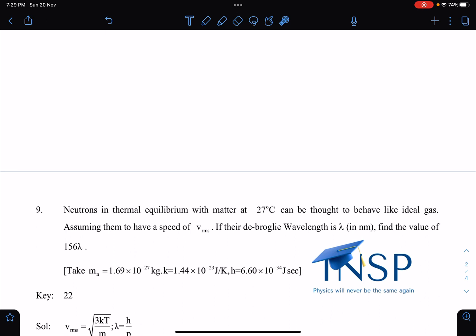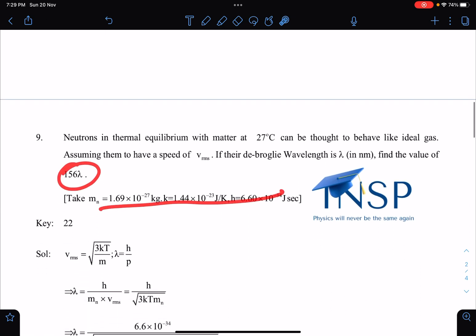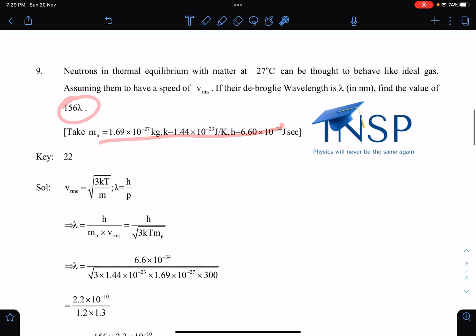If their de Broglie wavelength is lambda in nanometer, find the value of 156 lambda, and these values are given. So here the idea is very simple, just try it. So v_rms definition we are writing and lambda de Broglie.